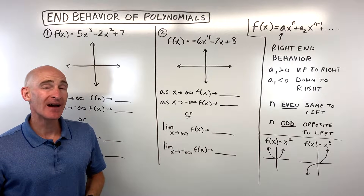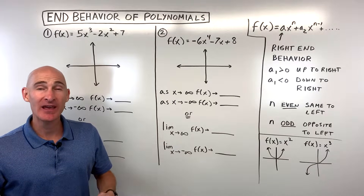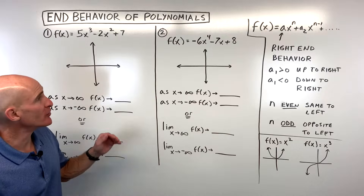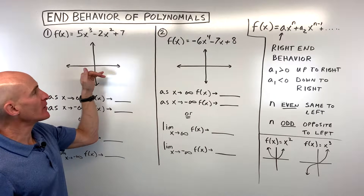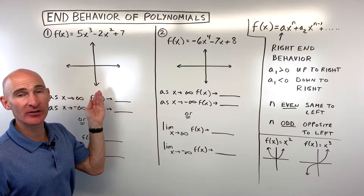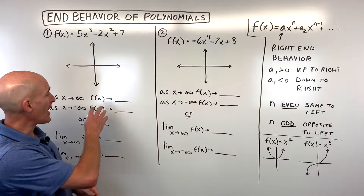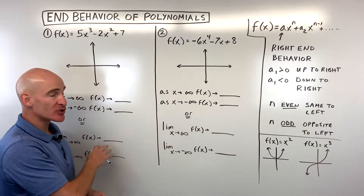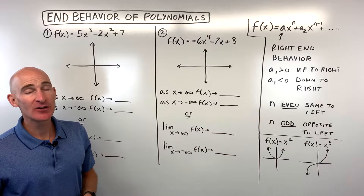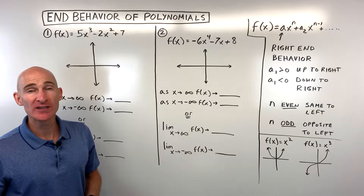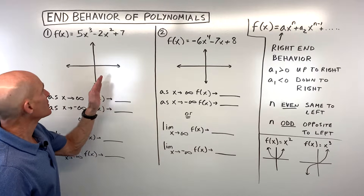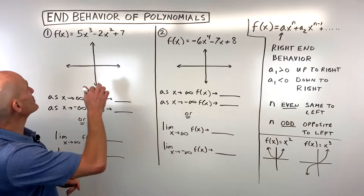In this video, you're going to learn how to find the end behavior of polynomials. We're going to determine whether the graph is going up to the right or down to the right, or up to the left or down to the left. We'll also talk about how to describe that and write it in the proper notation. Let's dive in and go through a few examples together, with some you can practice on your own.